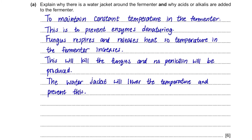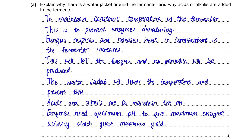Acids or alkalis are added to maintain the pH of the fermenter. Enzymes are sensitive and their rate of reaction depends greatly on pH. At a certain pH, their activity will be at maximum, giving maximum yield as a result. It is also good to know the function of other features of the fermenter.